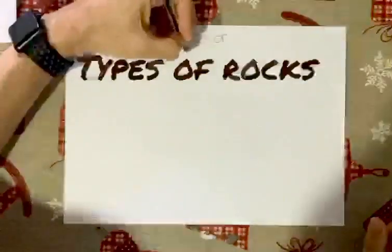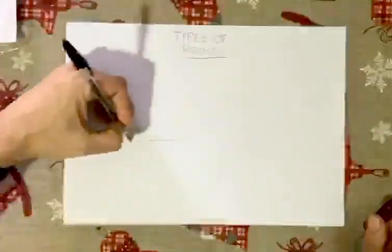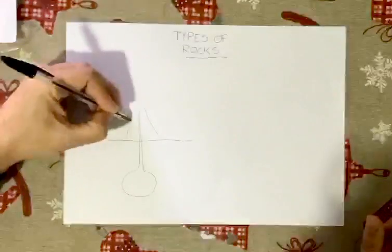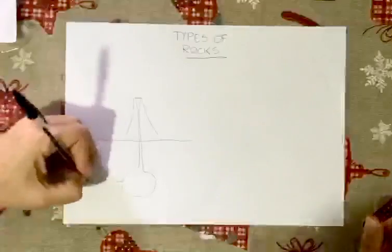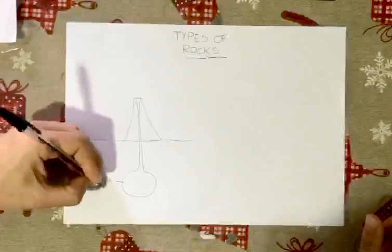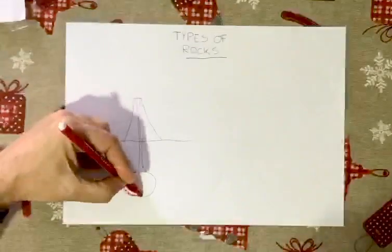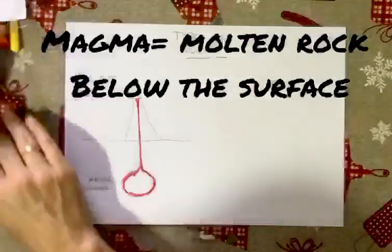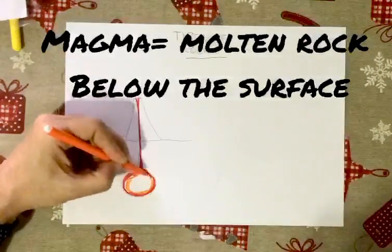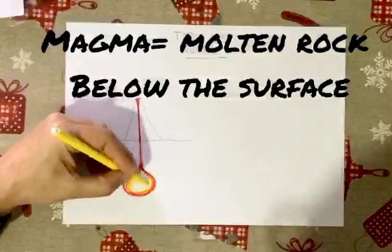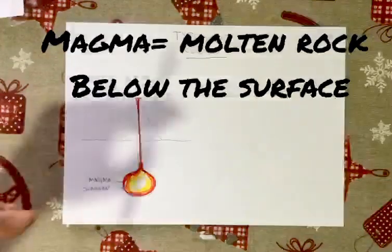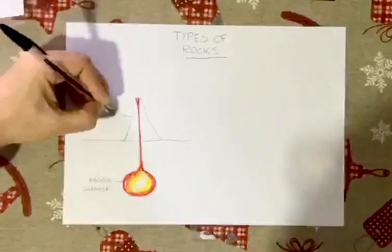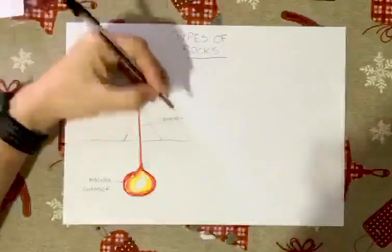Today we're going to talk about different types of rocks. There are molten liquid rocks under the surface of the earth. Magma is a melted rock that is under the ground. It's at extremely high temperatures and is stored in magma chambers. Sometimes magma finds its way out to the surface through the chimney of a volcano.